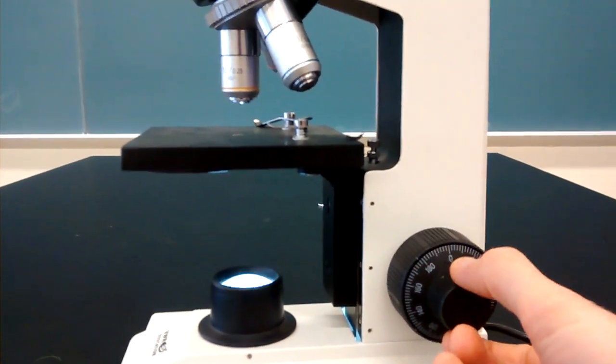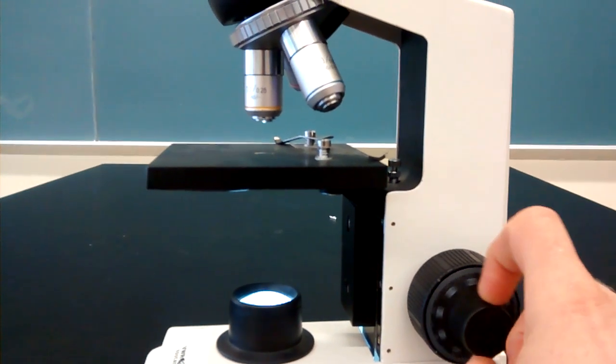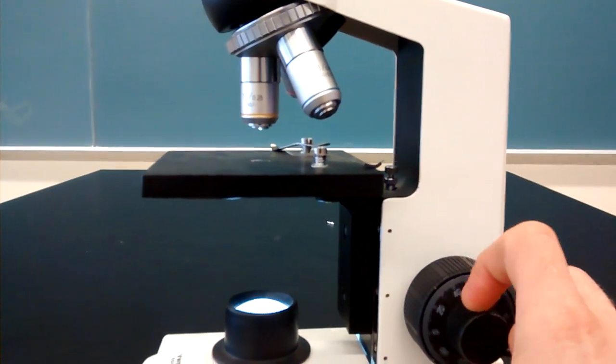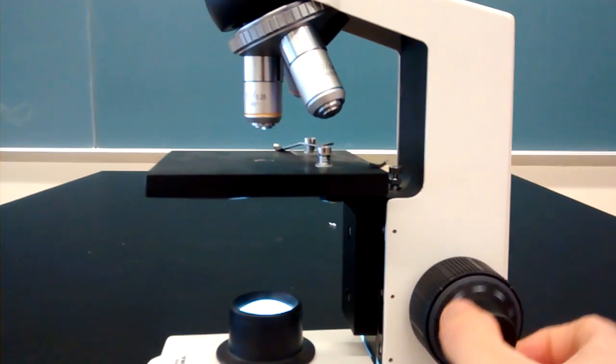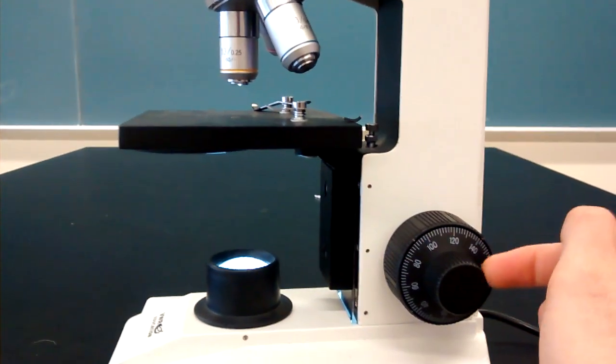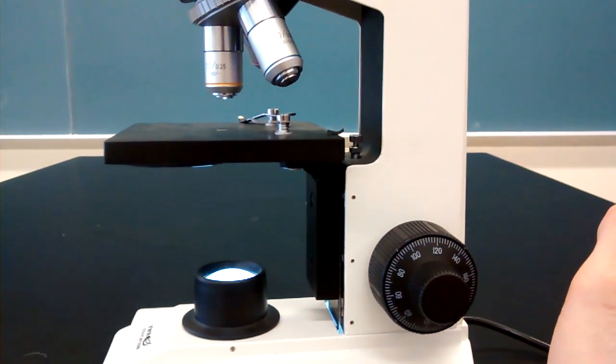Nested inside of that is this fine focus adjustment knob. That does the same thing the coarse does, but in much smaller increments. Sometimes the fine focus knob is a separate knob on some of the microscopes.